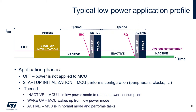Then the MCU receives an interrupt or an event. It might come from an external source, for example from a GPIO or some communication interface. It might come as well from an internal source, for example a periodic wake-up timer. An interrupt is a trigger to wake up the MCU from low power mode, which is why this phase is called wake-up.